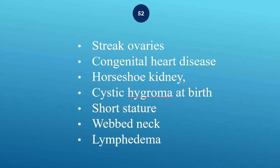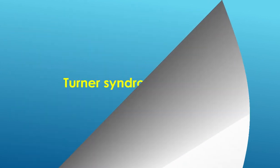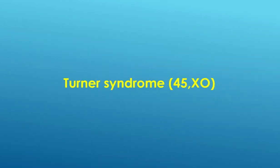Streak ovaries, congenital heart disease, horseshoe kidney, cystic hygroma at birth, short stature, webbed neck, and lymphedema — Turner syndrome, 45,X0.